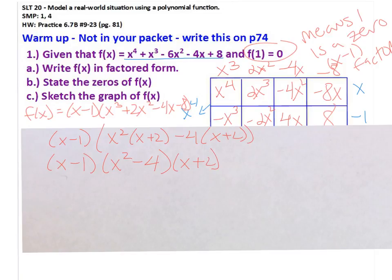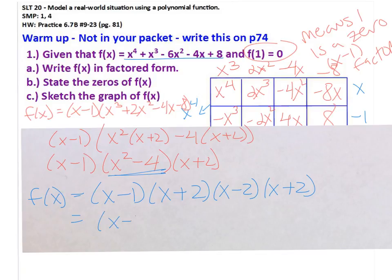But I'm not done factoring yet, the difference of two squares. So to factor completely, we have x minus 1, x plus 2, x minus 2, and then the x plus 2. I'm going to rewrite that with this x plus 2 and x plus 2 as x plus 2 squared, since I have to graph, and I need that multiplicity of 2 to help me graph.